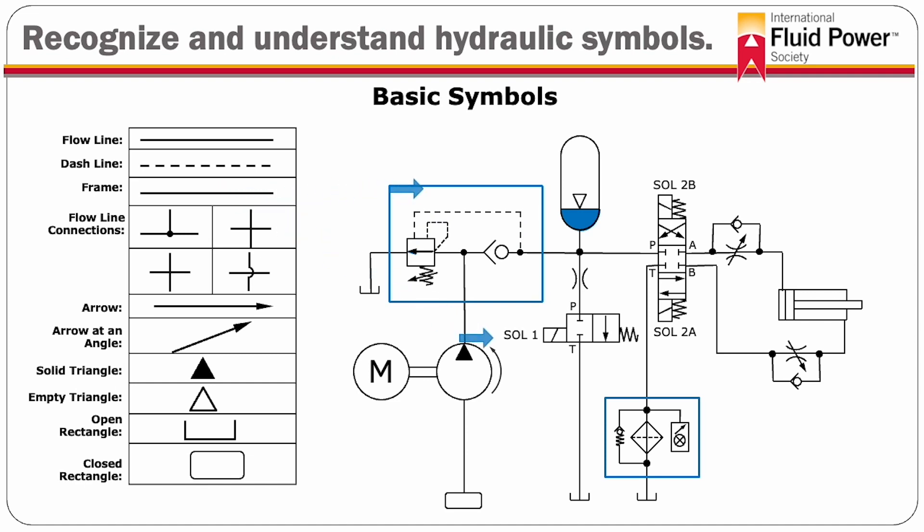Frame. Different style lines create a frame for multiple components. It can consist of a dash, dotted lines, which represents a grouping of discrete components into an assembly, a solid line, which represents component with linked functions.